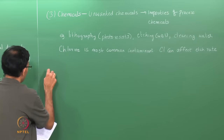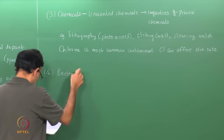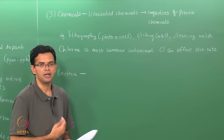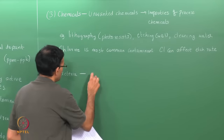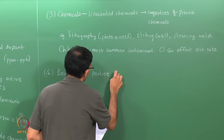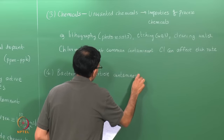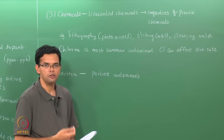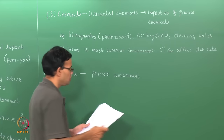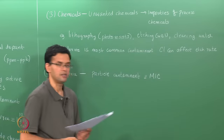Bacteria is another type of contaminant. It essentially acts as a particulate contaminant because typical bacteria sizes are of the order of nanometers or more. Bacteria are also a source of metallic ions such as sodium or potassium, so they can also act as mobile ionic contaminants — MICs.